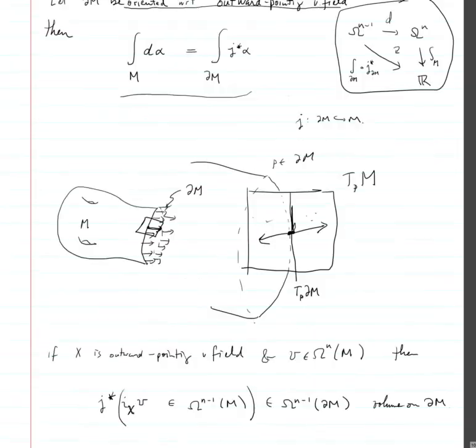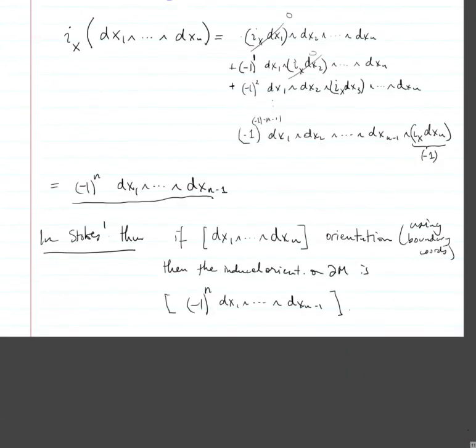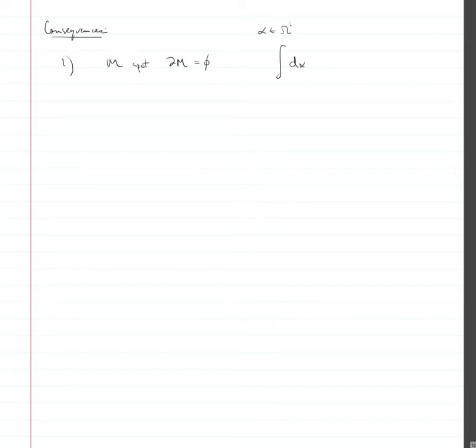I just want to mention the important meaning of this. The first big consequence is that if m is compact and the boundary of m is empty, then the integral of anything exact is zero, because it's equal to the integral on the boundary, but the boundary is empty.